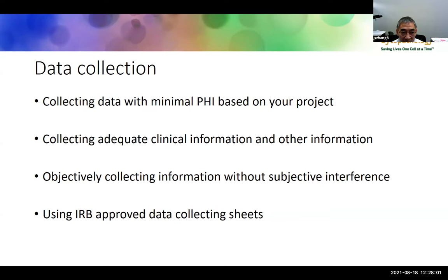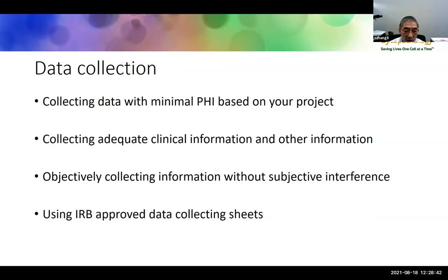Use the minimal PHI needed for your study. You should objectively collect all information without any subjective interference. A lot of times when we collect data, we may be unintentionally biased by the expected result because we know our hypothesis. Use IRB-approved data collection sheets and make sure to follow them exactly. If you have any deviation, make sure to get IRB-approved modification before making the change.